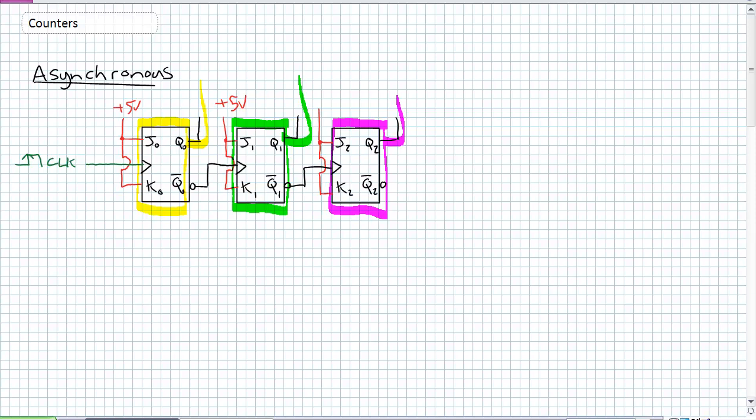What are my inputs? Look at them. Every single stage, J0, K0, J1, K1, J2, K2, they're all in toggle mode. There should be a +5 volts right here. What does toggle mode do? Toggle mode is any time a positive edge happens, the flip-flop changes state. Which one, however, has the clock? There's only one of them.